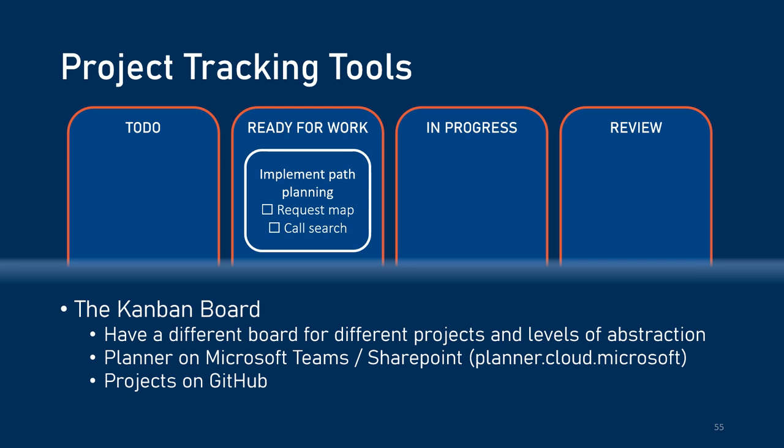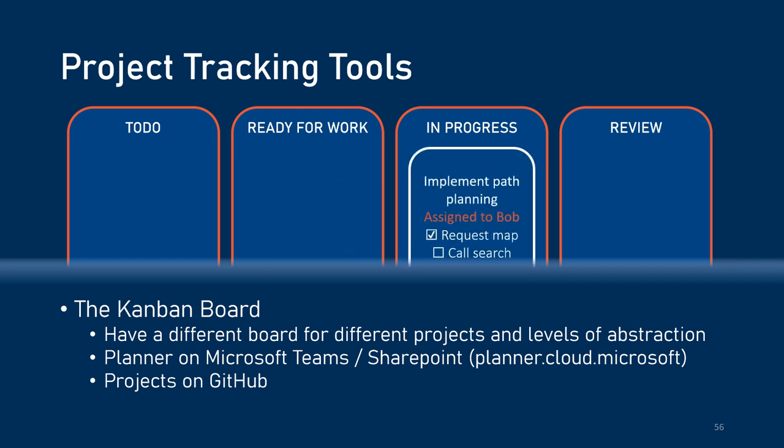Then you move it to the Ready for Work bin, and at this point you should have it more well-defined. For example, in the case of path planning, you might want to be able to request a map of our environment and also be able to call search functions so we can look through that environment. We've got these checkboxes here. Once you've got it ready for work, you can assign it to someone, and at that point it's In Progress. Let's say we've assigned it to Bob, and you can see here that he's already checked off the request map component of this action item.